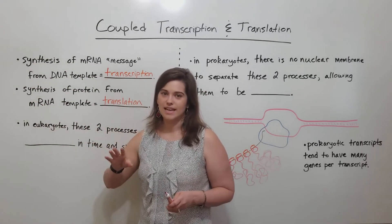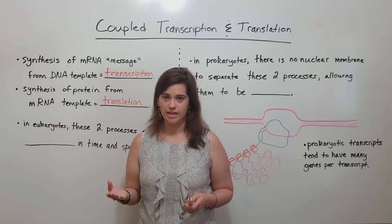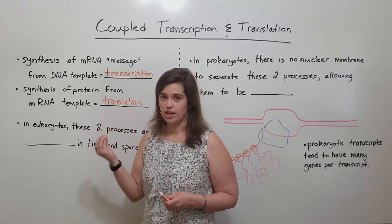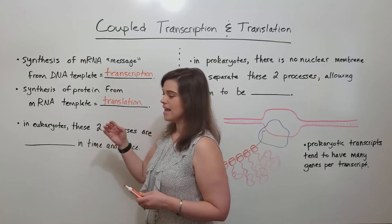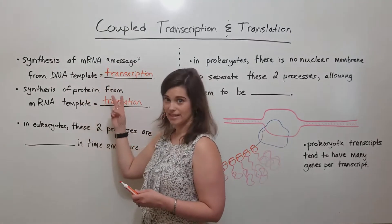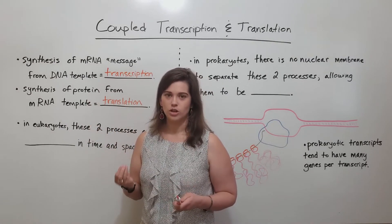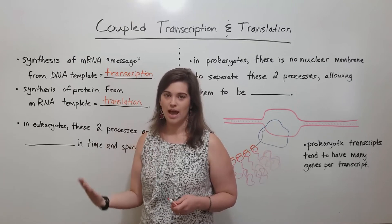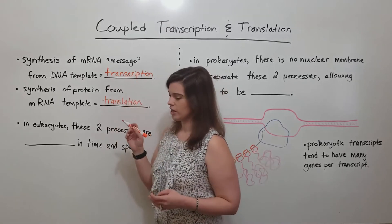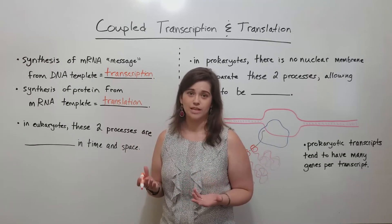These two processes together are the major processes of gene expression in the cell. When I say gene expression, I mean the information contained in the gene, in the genetic information, in the DNA of the cell, is being expressed by way of an mRNA message that has been translated during translation to make protein. The proteins are the functional units within the cell carrying out the activities encoded by those genes. Transcription and translation are the two major processes in gene expression, and we learn about them with the central dogma.